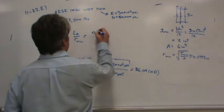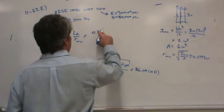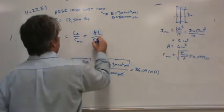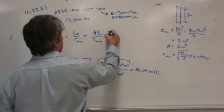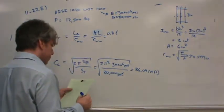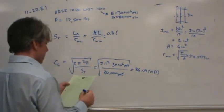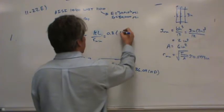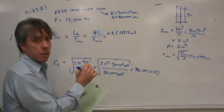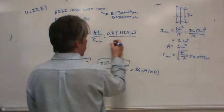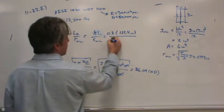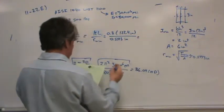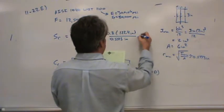We're going to take 80% of the length of the column. KL over R min. K is 0.8. What is the length of that column? 12.75 feet. If you convert that to inches, that's 122.4 inches. And then the minimum radius of gyration is about 0.5773 inches. When you plug this into your calculator, you find that the slenderness ratio is about 212.